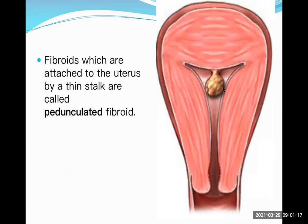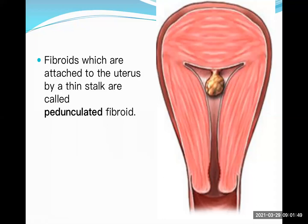Pedunculated fibroid means it is attached to the uterus by a stalk. Blood supply reaches through the peduncle. If the fibroid detaches from this stalk, it may degenerate. For subserosal pedunculated fibroids on the outer surface, it may detach completely and attach to another intra-abdominal organ and grow there — this is known as parasitic fibroid.